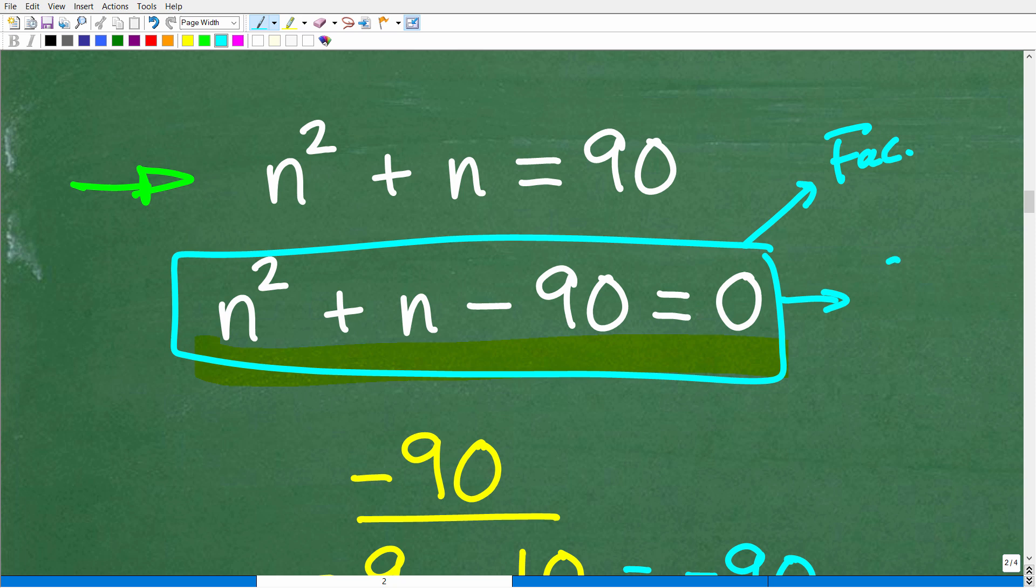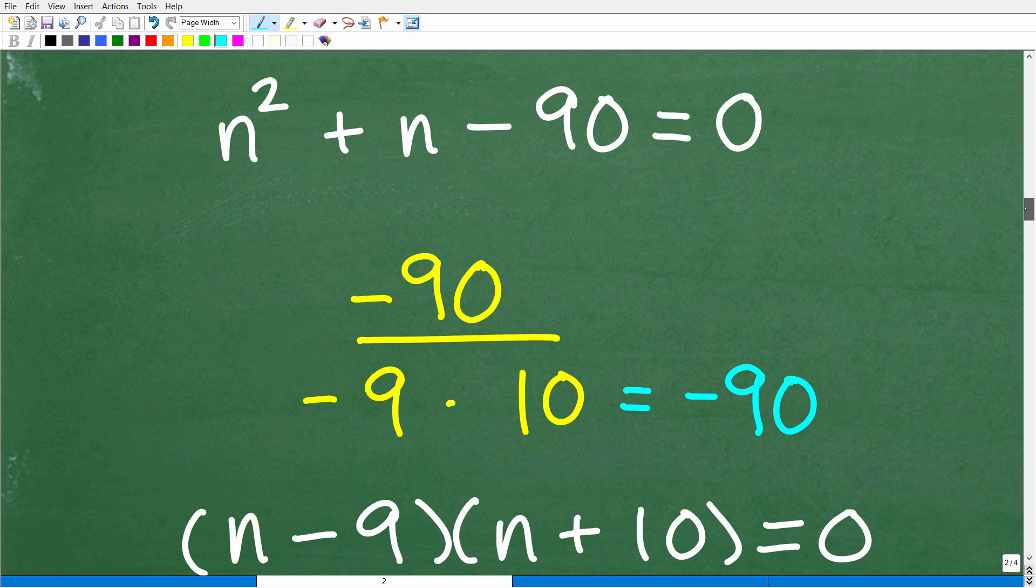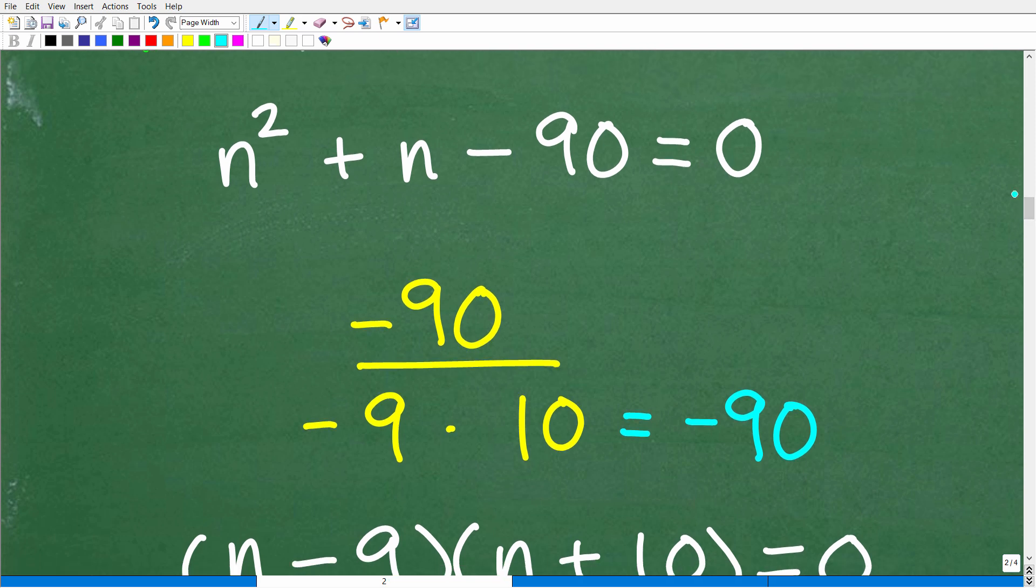We're going to attempt to factor it. But if we can't factor it, we can always use our secret weapon, which is the quadratic formula to solve for N. Either way, we can get the solution. Let's hope we can factor it. We can factor this quadratic trinomial. I'm going to show you a lovely little technique here. I call this a case one trinomial because we have a one as a leading coefficient.